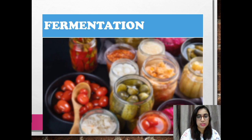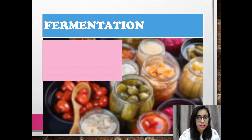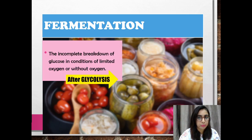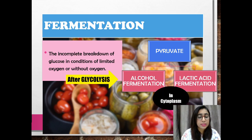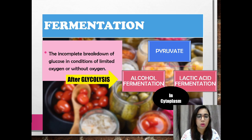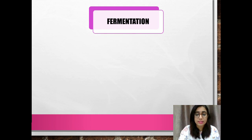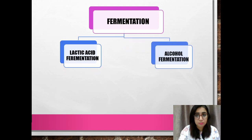Fermentation is different from aerobic respiration in its metabolic pathway after glycolysis. After glycolysis, the pyruvate produced will undergo either alcohol fermentation or lactic acid fermentation in the cytoplasm. Fermentation is the incomplete breakdown of glucose in conditions of limited or absent oxygen. Both lactic acid and alcohol fermentation occur in anaerobic conditions in the cytoplasm of the cell.